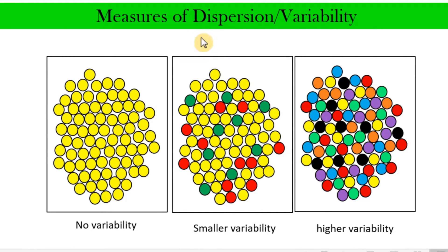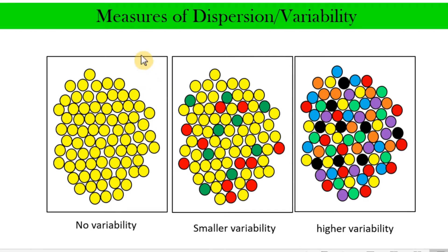So when we say dispersion or variability, we are actually talking about how similar or how different the data points are that are included in a set of data. That difference or similarity is what we want to measure under measures of dispersion or variability.